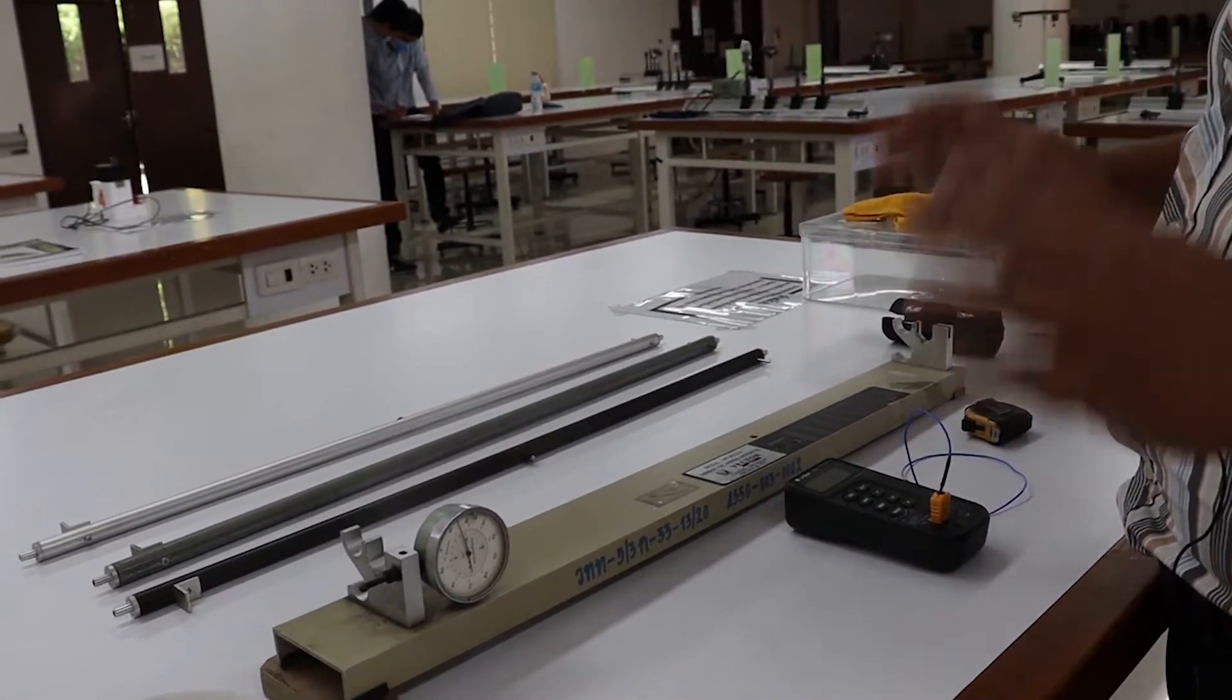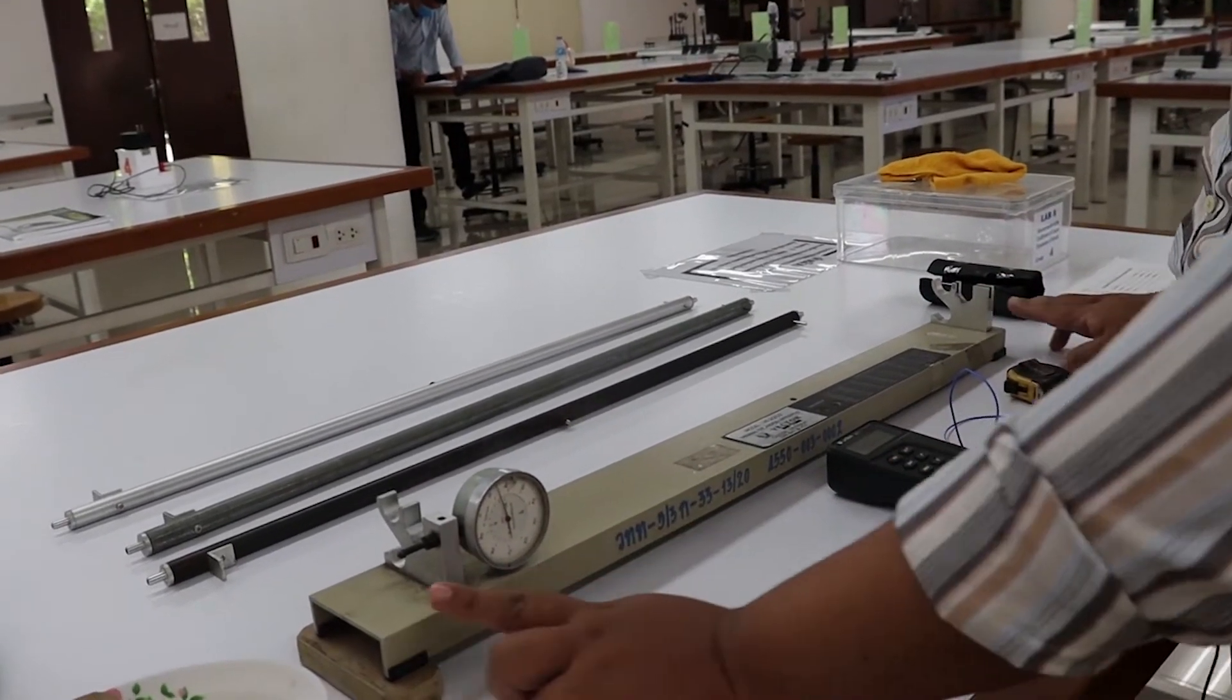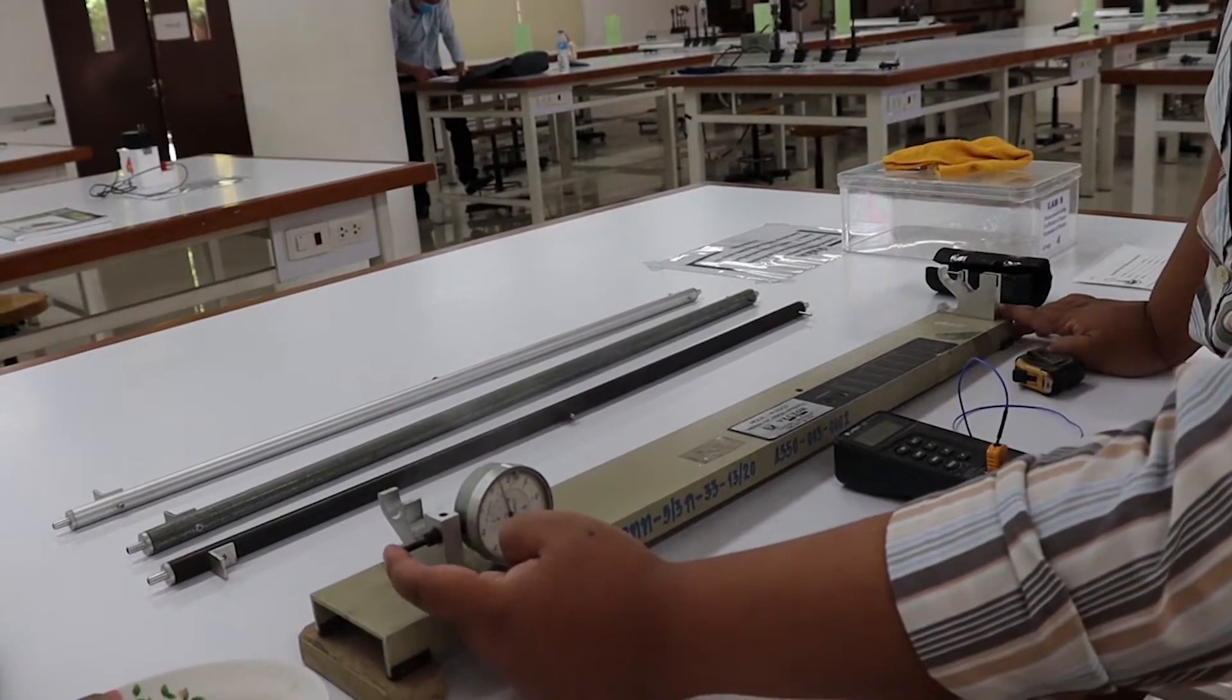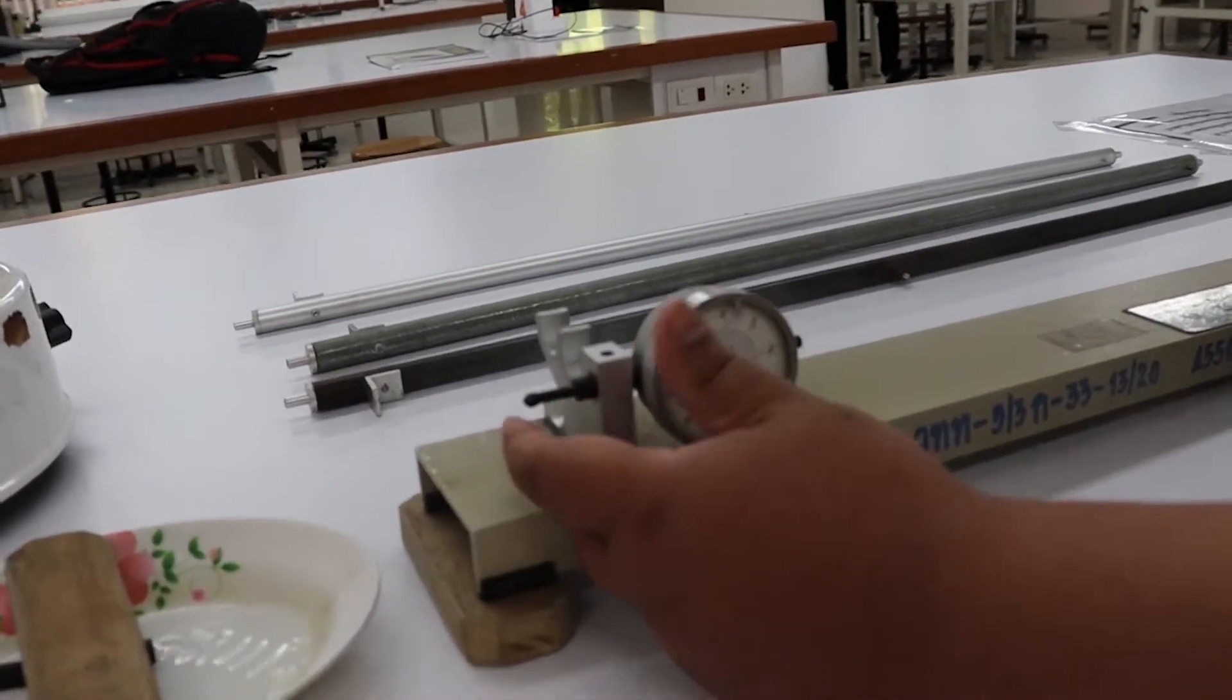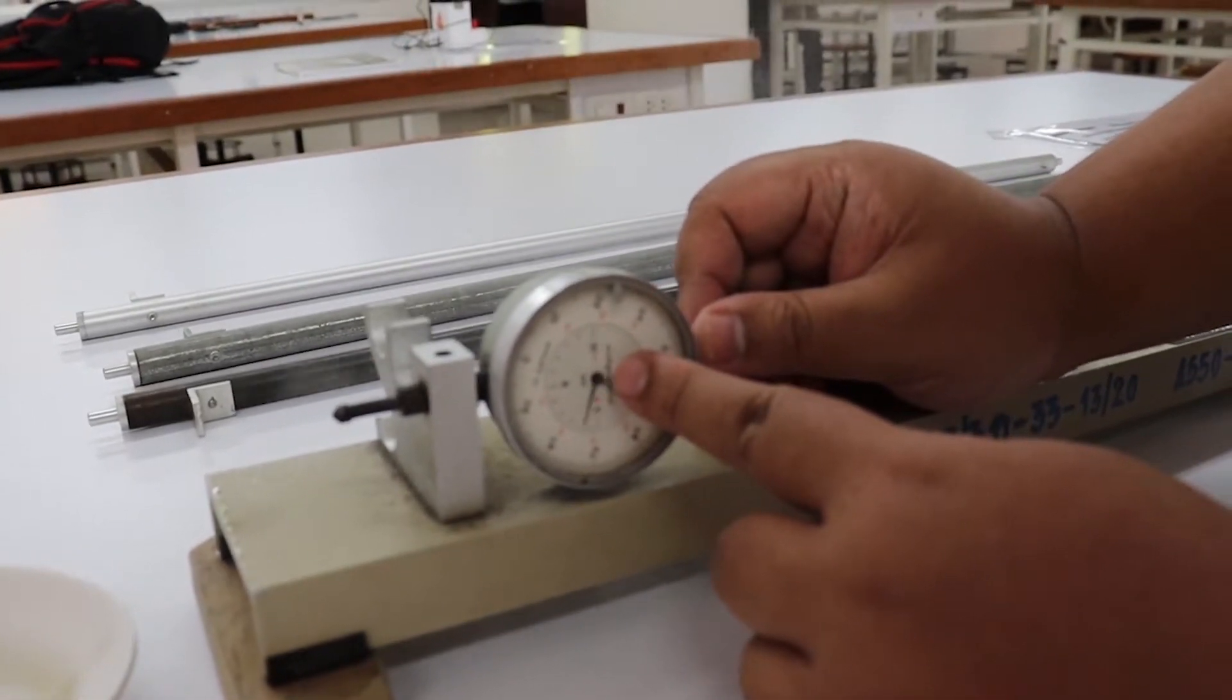The equipment used to measure delta L is this equipment. It consists of the base and this is the dial gauge. When you push it, the long hand of it will change.